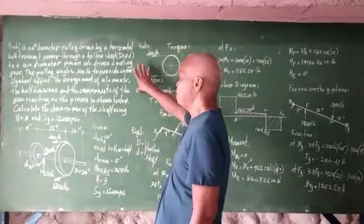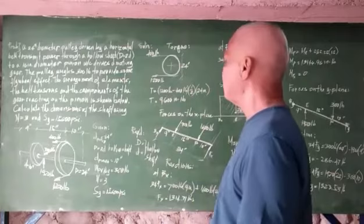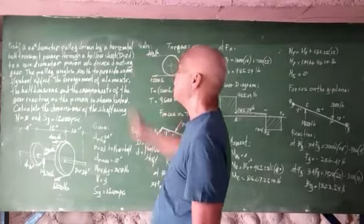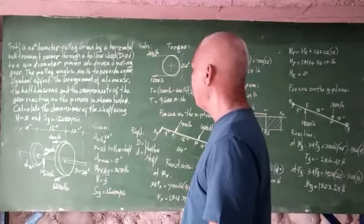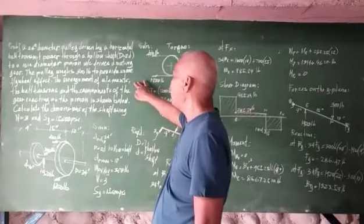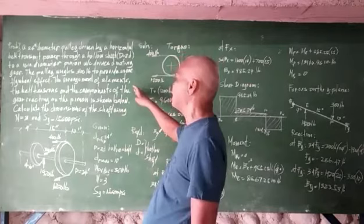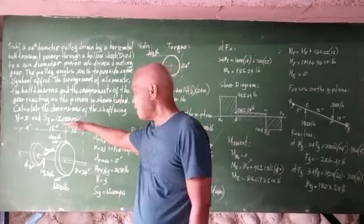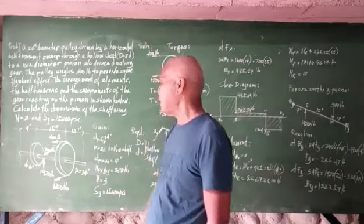Now we consider the last problem involving shock loading. A 24-inch diameter pulley driven by a horizontal belt transmits power through a hollow shaft where the outside diameter equals 2 times the inside diameter, to a 10-inch diameter pinion which drives a mating gear. The pulley weighs 300 pounds to provide some flywheel effect. Calculate the dimensions of the shaft using n equal to 3 and Sy equal to 15,600 psi.